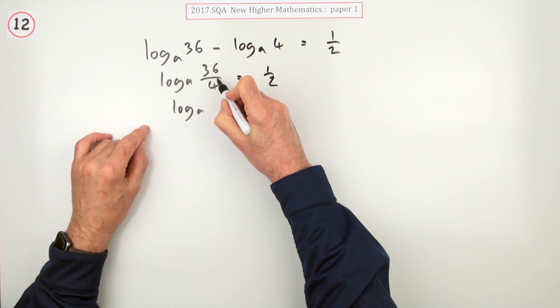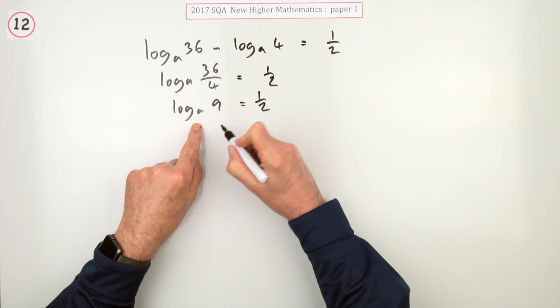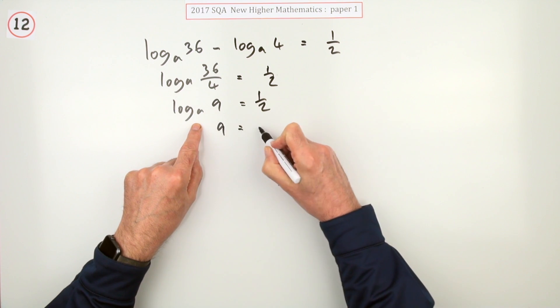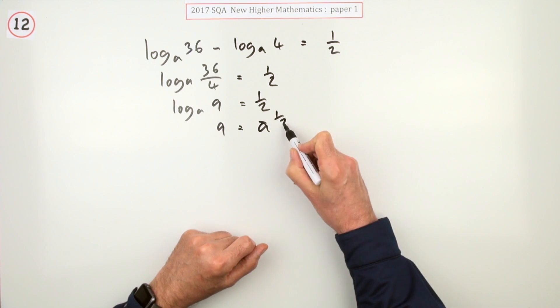Now, oh I could have done it, doesn't matter. 36 divided by 4 is 9, which means that in this part here, 9 should be equal to a to the power a half.